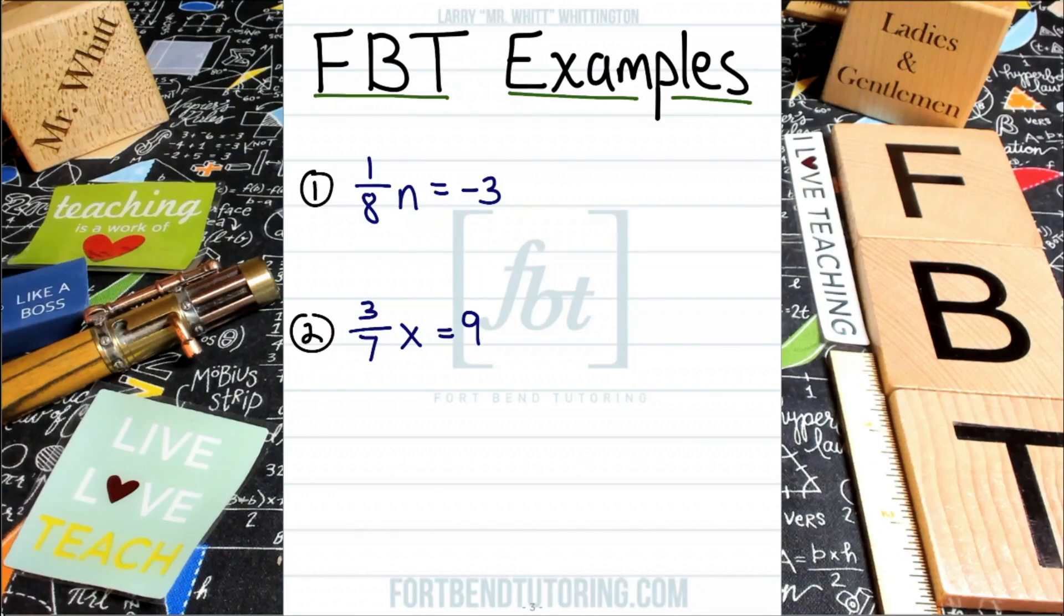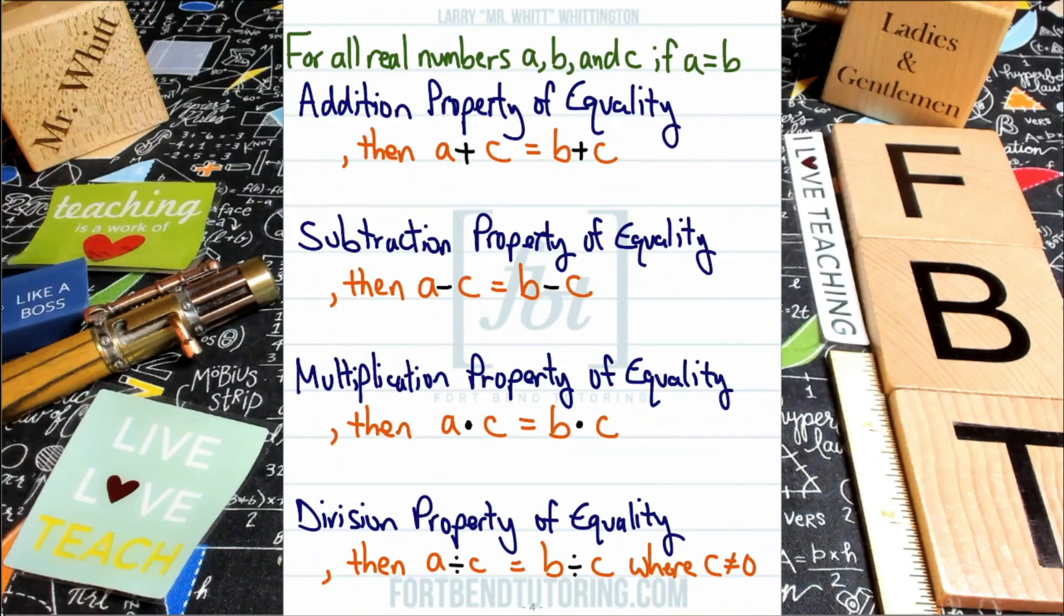I'm going to give you 2 examples to work with today. The first is 1/8 n equals negative 3. The second is 3/7 x equals 9. Let's see how this plays out, shall we? And keep in mind that we will still be implementing when necessary all of your property of equality techniques that we have introduced in this series, plus I guarantee you to show you at least one additional property in this video.